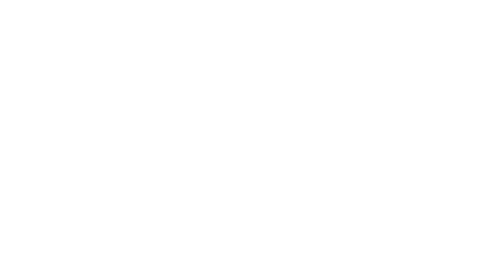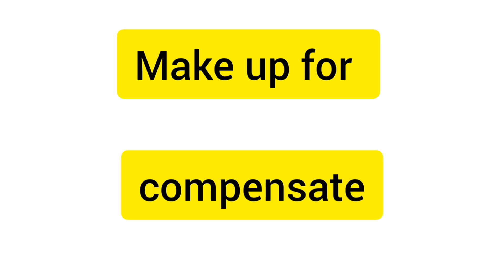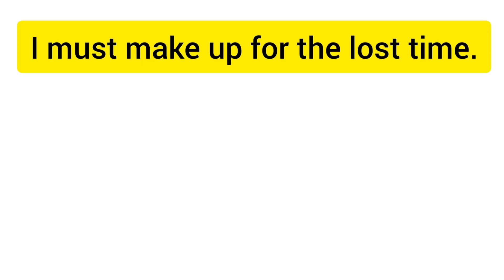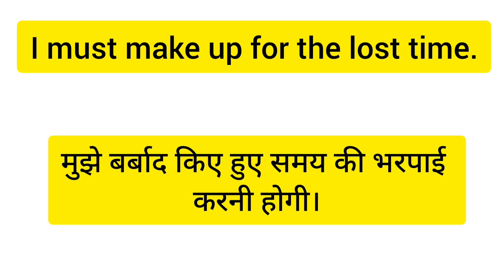My next phrasal verb is make-up for. Make-up for ka matlab hota hai compensate karna — jo galti ki hai usko compensate karo, jurmana bharo, chhati ki purti karo. Example: 'I must make up for the lost time.' Mera jo time barbad ho gaya, us time ki mujhe bharpai karni hogi — chhati purti karni hogi.